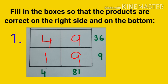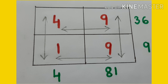Children you can see 4 9s are 36, 1 9s are 9 on the right side, and on the bottom 9 9s are 81.